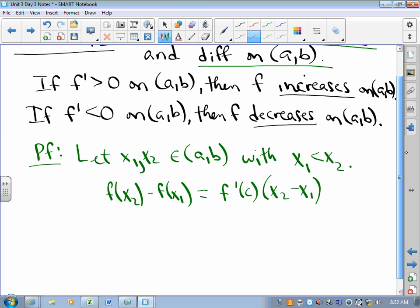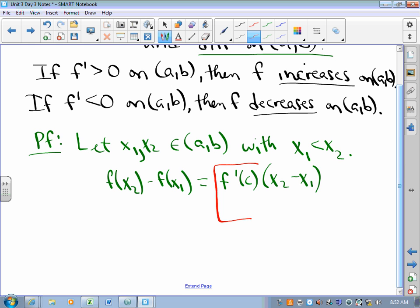So what happens? I know if this is positive by assumption, and I know that this is positive because it is, then this must be positive. And that being the case, what does that mean? F of X2 is bigger than F of X1, and then F is increasing.